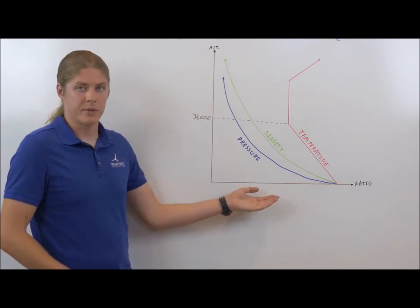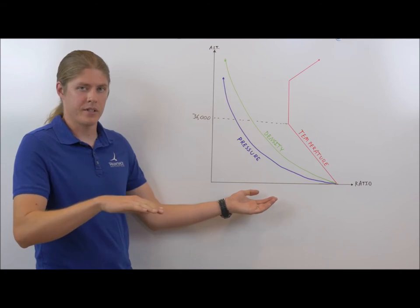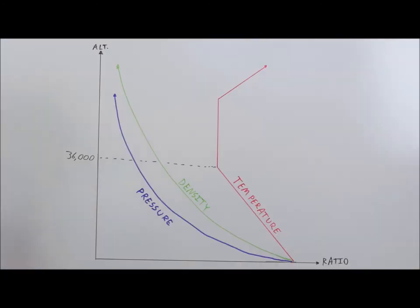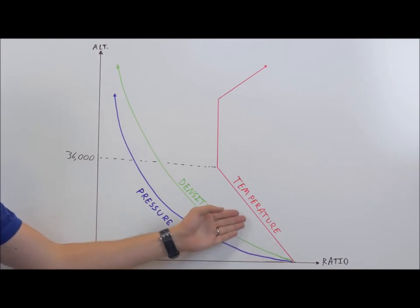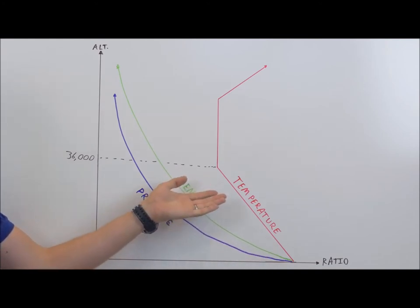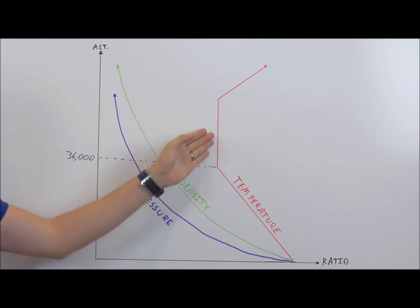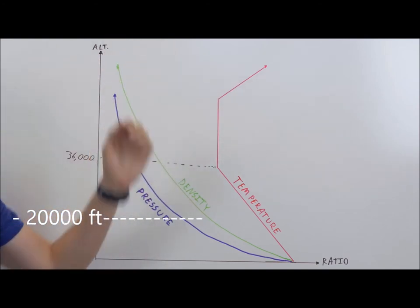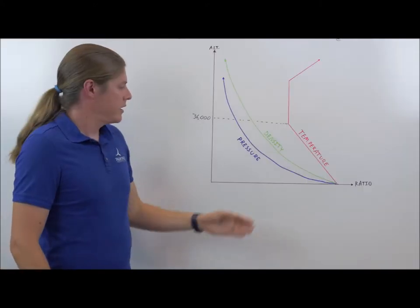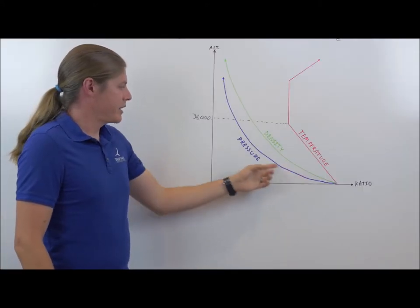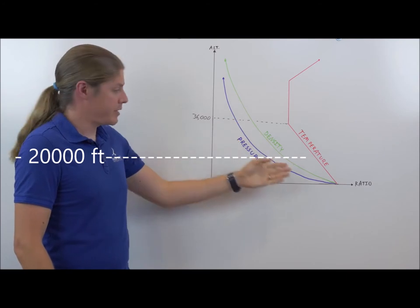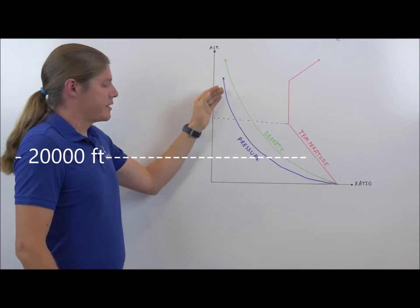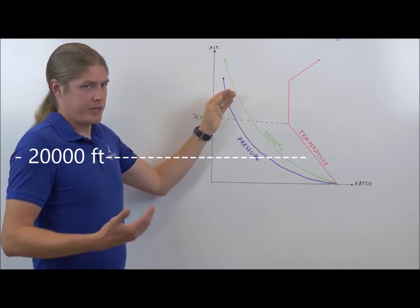On the x-axis we have the ratio of value at altitude to value at sea level, and on the y-axis we have altitude. As you can see, temperature varies linearly up to the tropopause at about 36,000 feet, then remains constant until well above the cruise altitude of most aircraft, then increases and decreases again as you reach space. Density and pressure vary exponentially with altitude. There is a huge difference between the density and pressure at sea level and the density and pressure at cruise altitude for jet aircraft.